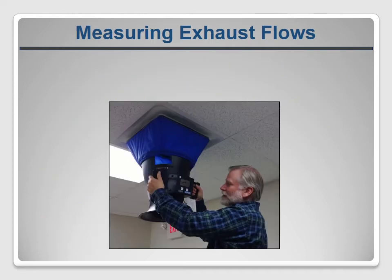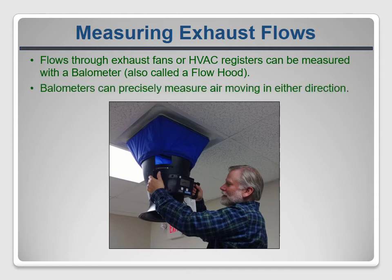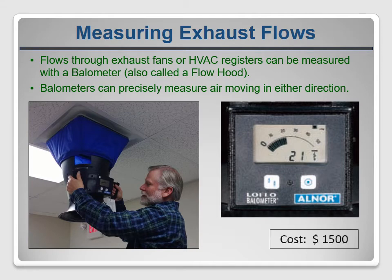Flow hoods, which are also called palometers, are commonly used for commissioning HVAC systems in commercial buildings. They are accurate and very simple to use — you just tell the device which direction the air is flowing, place the hood over the inlet or outlet, and read the flow from the display. The biggest downside to these devices is the price; they start at about $1,500.